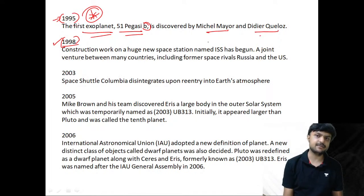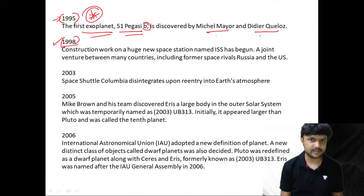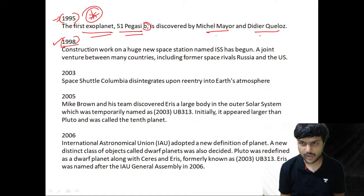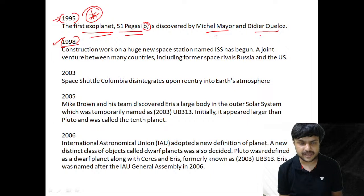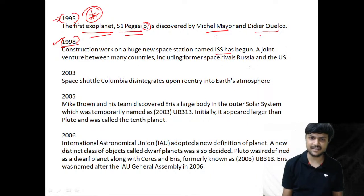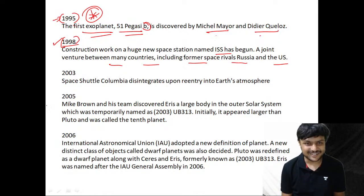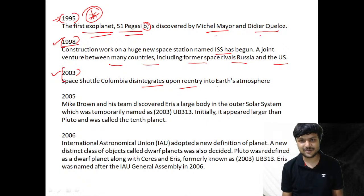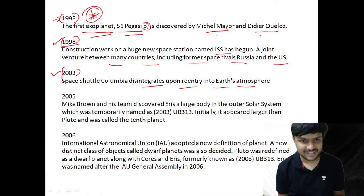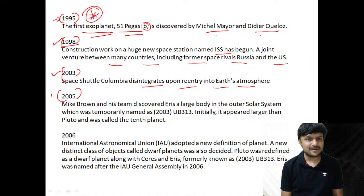In 1998, construction of the International Space Station (ISS) began — a joint venture between many countries including former rivals Russia and the USA. In 2003, Space Shuttle Columbia disintegrates upon re-entry into Earth's atmosphere.